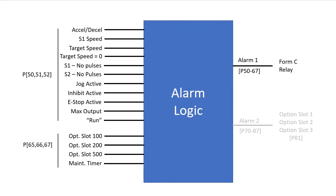You can alarm if any combination of these signals are active. But you can also qualify the alarms. Maybe you don't want any alarms while the drive is inhibited, or being jogged, or if the target speed is zero.